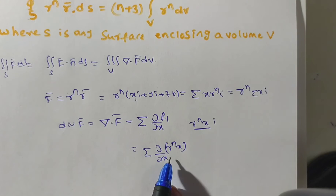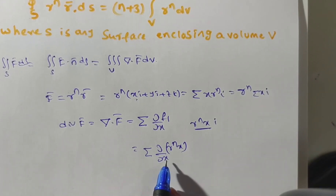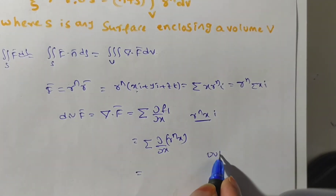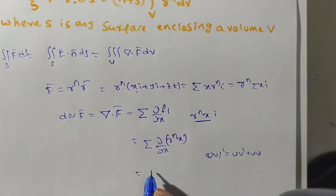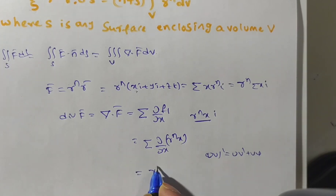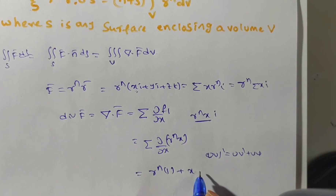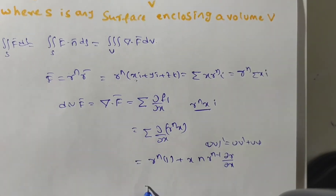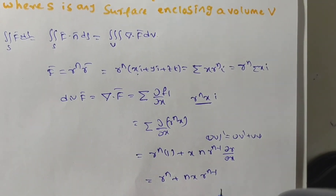Here r is a function of x, y, z and x is also a function of x, so we apply the UV rule. UV differentiation gives: u·v' + v·u'. So the derivative gives r^n times the derivative of x (which is 1), plus x times the derivative of r^n, which is n · r^(n-1) · ∂r/∂x.